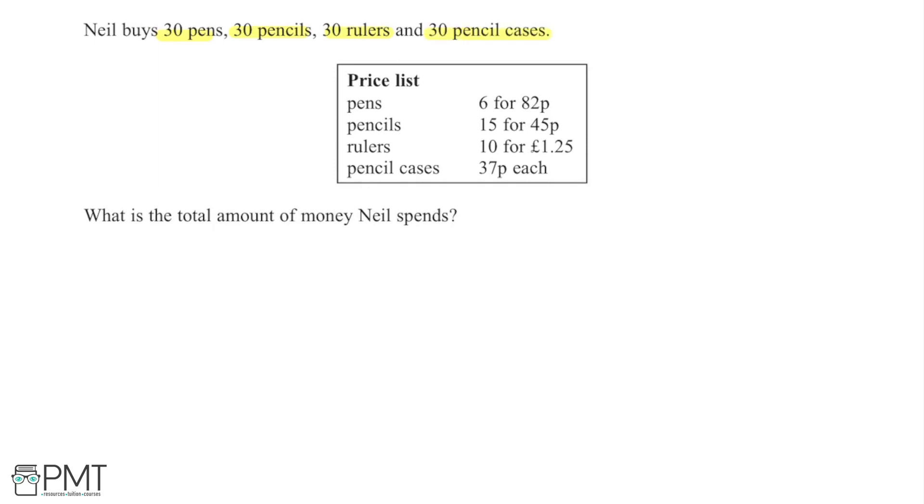I then have a price list which tells me the prices of each of these things. So pens you can buy 6 for 82 pence, pencils are 15 for 45 pence, rulers are 10 for £1.25, and then pencil cases are 37 pence each. And we're asked to use this information to find the total amount of money that Neil spends on all of these items.